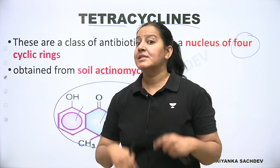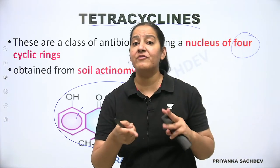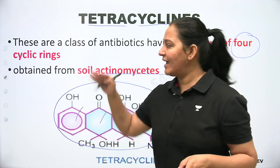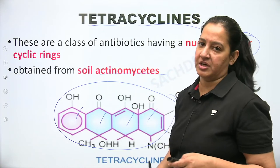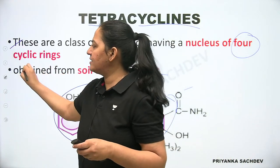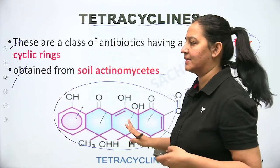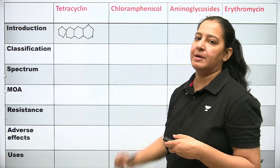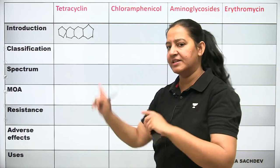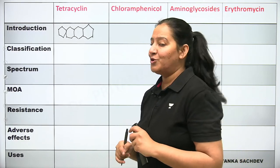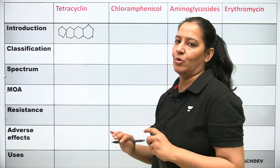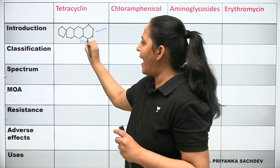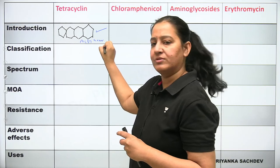Mechanism of action of tetracycline: It inhibits Step 2 of translation. Tetracycline enters the bacterial cell, binds to the 30S subunit of the ribosome (not 50S — this is an MCQ point), and inhibits the A window. So new amino acid cannot come and bind at the A window. The peptide chain cannot grow. Since the bacteria already has existing protein, it does not immediately die — but it cannot divide. Therefore, tetracyclines are bacteriostatic, not bactericidal.